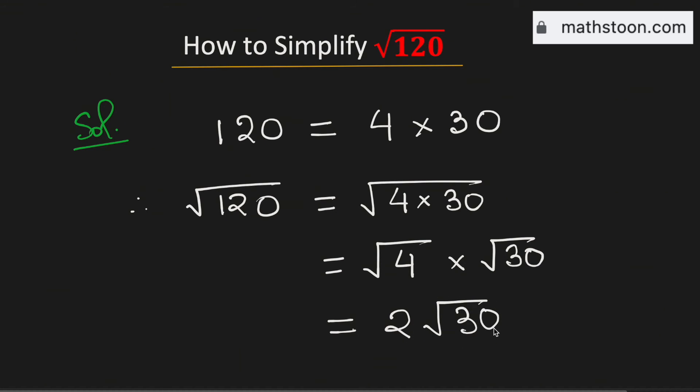As square root of 30 cannot be simplified further, this is the simplification of the square root of 120. And this is our final answer. Thank you for watching.